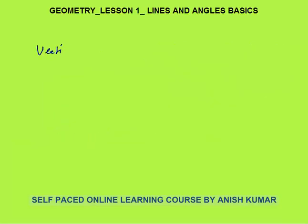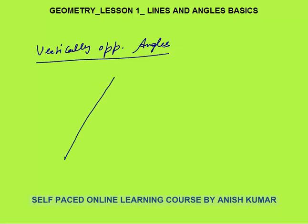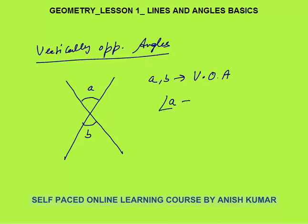Next is vertically opposite angles. When two lines cut each other, angle A and angle B are called vertically opposite angles. Their property is that they are always equal — angle A is always equal to angle B.